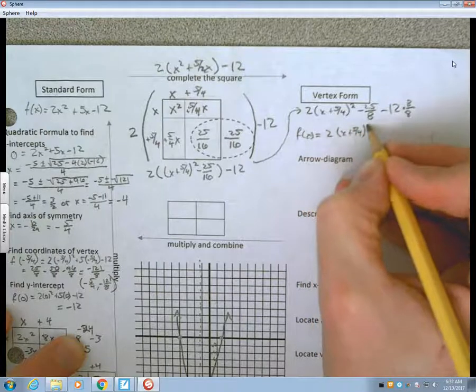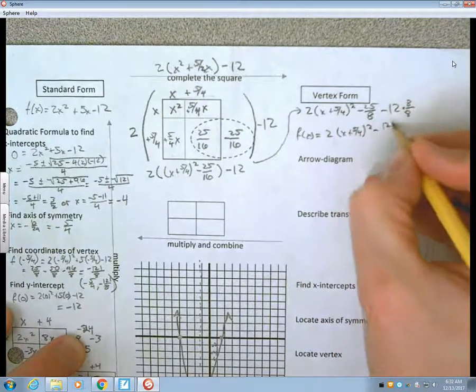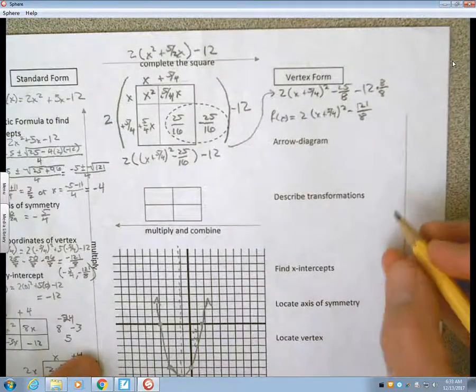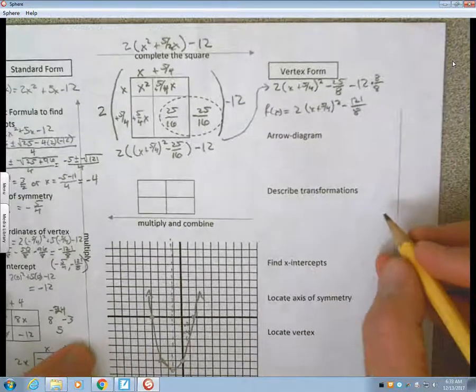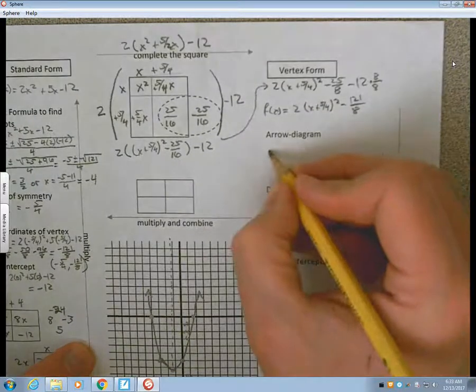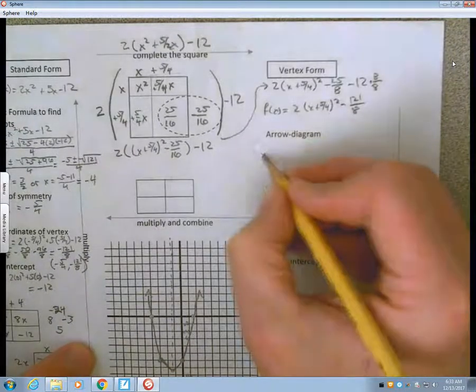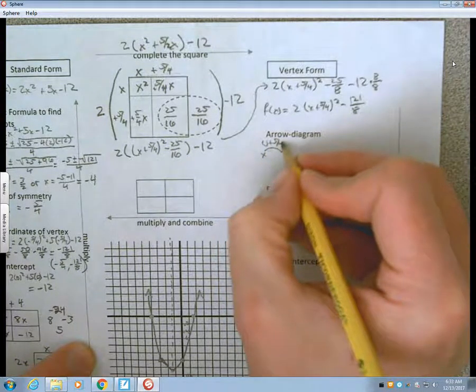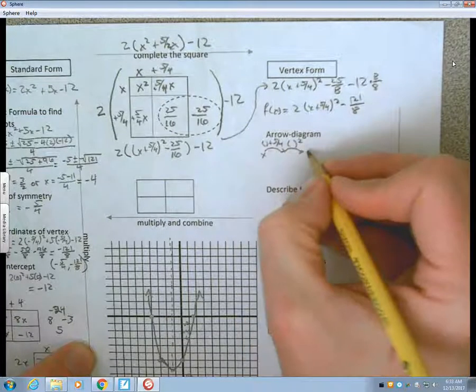The advantage of the vertex form is the x shows up only once, so I can represent that with an arrow diagram. If I start with an x, my first step is to add 5 fourths. And then, I will square, multiply by 2, and subtract 121 eighths.